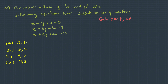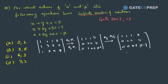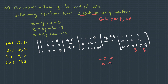Here we have another question from GATE 2007. For what values of alpha and beta do the following equations have infinitely many solutions? For infinite solutions, one row must become completely zero. Writing the augmented matrix and performing row transformations, we set that row to zero: alpha minus two equals zero gives alpha = 2, and beta minus seven equals zero gives beta = 7. So option A is the correct answer.